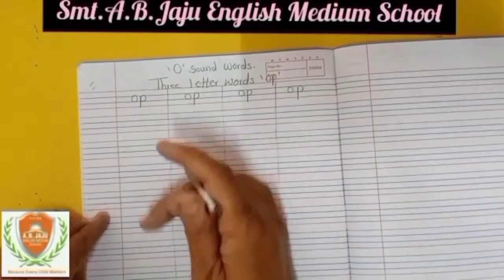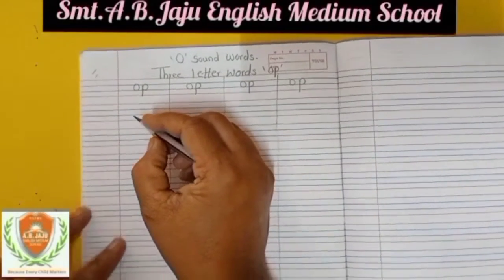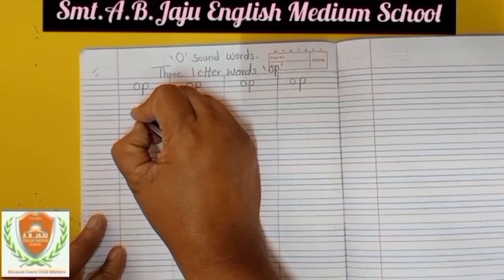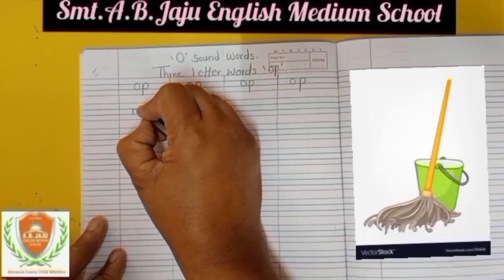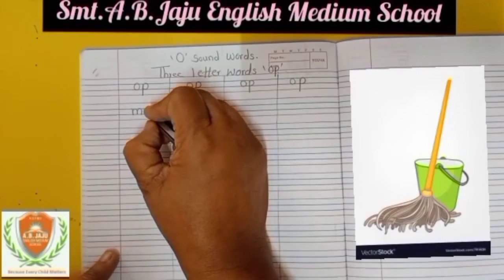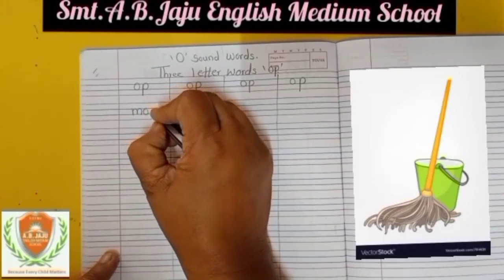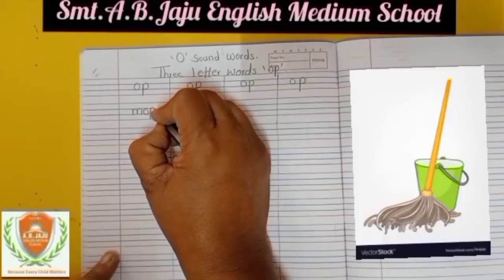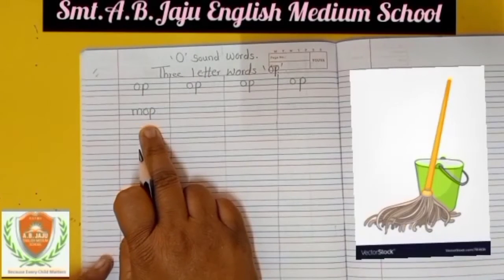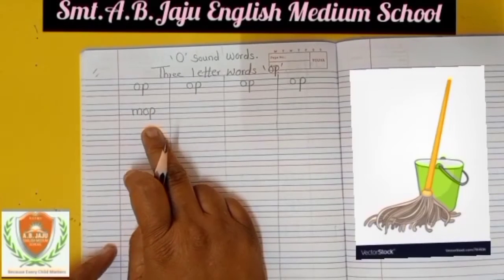Now we will make three letter words. Write down small M. Sound of M is M, sound of O is O, sound of P is P — M-O-P, mop.